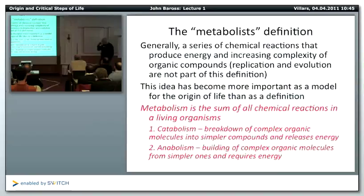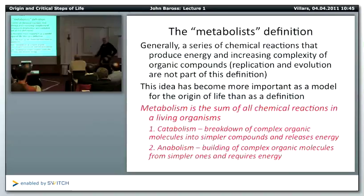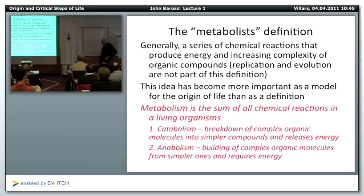Metabolism is the sum of all chemical reactions in living organisms. It's divided into two main categories: catabolism, where you release energy through breakdown of complex organic compounds, and anabolism, where you actually build complex organic compounds — you take simple organic compounds and make proteins, nucleic acids, and membrane lipids.